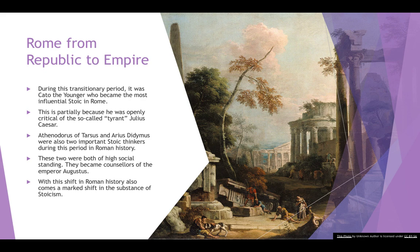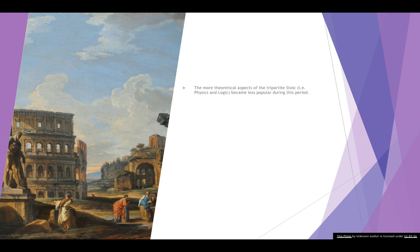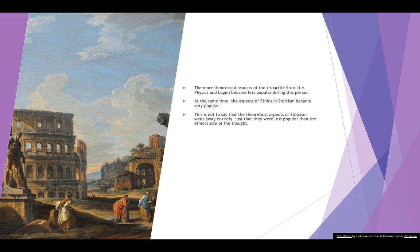With the shift from Republic to Empire, we also see a shift in the substance of Stoicism. The more theoretical aspects of the tripartite school developed by Zeno — the ideas of physics and logic — became quite a lot less popular during this period. The aspects of ethics in Stoicism became very popular. During the Greek era, the tripartite of physics, logic, and ethics were almost equal in value, but at this point physics and logic take the back seat for the ethical side.